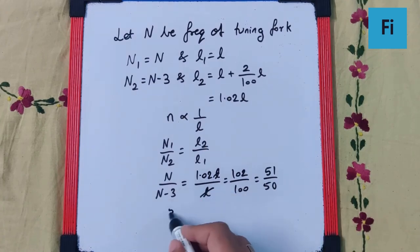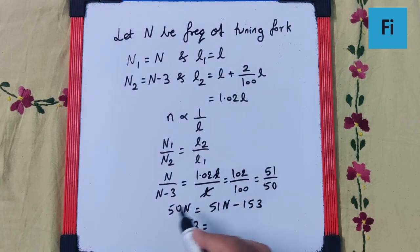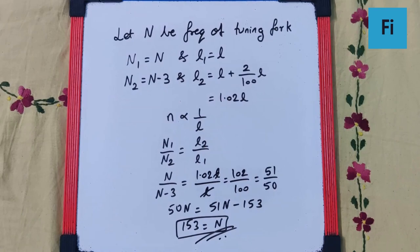So this will be 50N and this will be 51N minus 153. So 153 will be 51 minus 50, that is N. This will be our final answer.